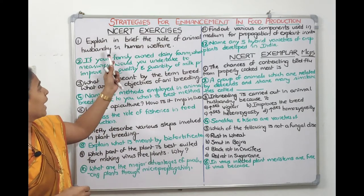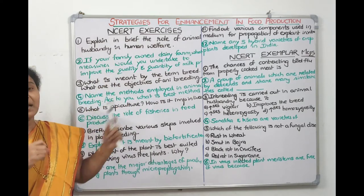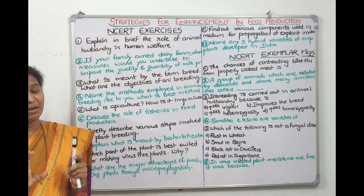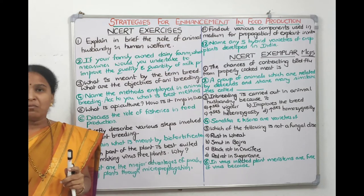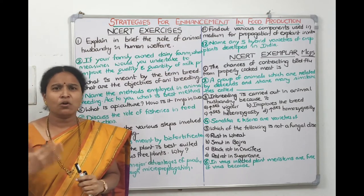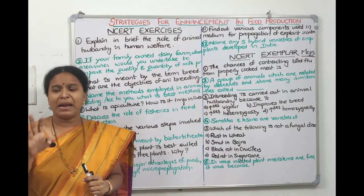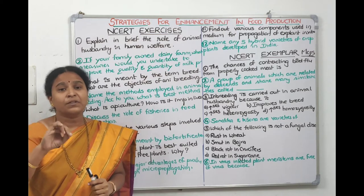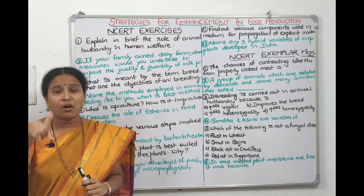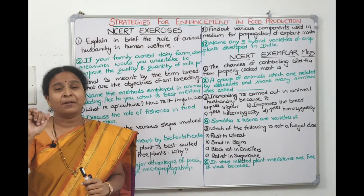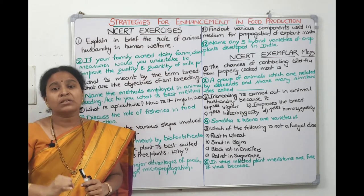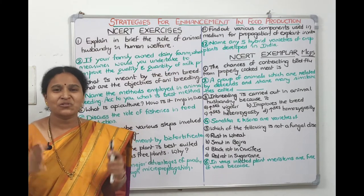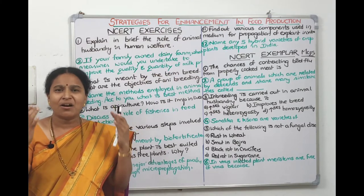There are enormous benefits from animal husbandry: milk, meat, eggs, honey, animal skin, drought animals for agricultural farming, bones used for powder and gelatin, horns, feathers, and cow dung used in biogas and as bio-fertilizer. So many products are there — enormous benefits we are getting.